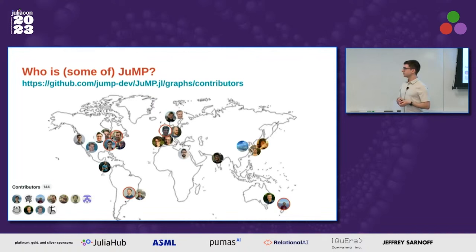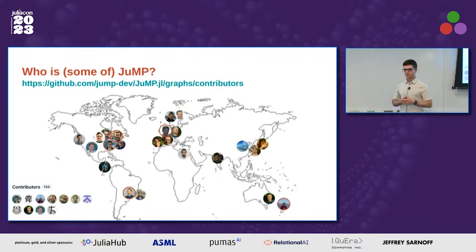JuMP is developed by quite a large team. This slide is a reminder for me to mention that most of what I'm talking about is not things I implemented myself — I'm like the spokesman. Most of what I'll cover has been done largely by Oscar, Benoit, and the whole rest of the core developers, plus more than 100 contributors to JuMP.